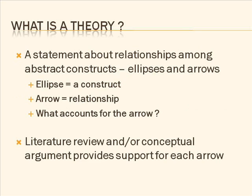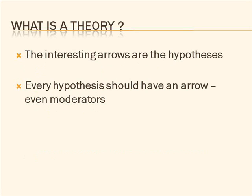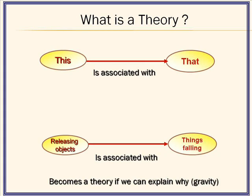A theory is a statement about relationships. You can express this in a conventional way, using ellipses or circles to represent a construct, and an arrow to represent a relationship. The theory will be in what accounts for the arrow. Use the literature review and your conceptual or logical argument to provide the support for each arrow. And this will be the way that your research can start to form. The interesting arrows are the hypotheses. You don't have to have a hypothesis for every arrow, but it's quite common to do so. But every hypothesis has to have an arrow. And when we talk about building models, we'll talk a little bit more about how those arrows will work.